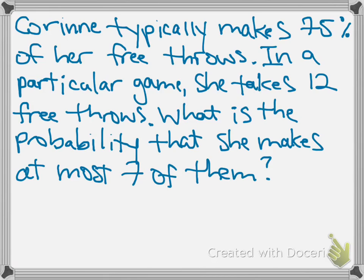We also needed independent events. This requirement is a little bit of a stretch — if you think about sports psychology, your performance at one point in the game can affect your mental outlook later on. But let's assume each of the 12 shots is independent, so whether she makes the first free throw does not impact whether she makes the second. Finally, we want the probability of success to be consistent for all observations, and that is satisfied because she typically makes 75% of her free throws.